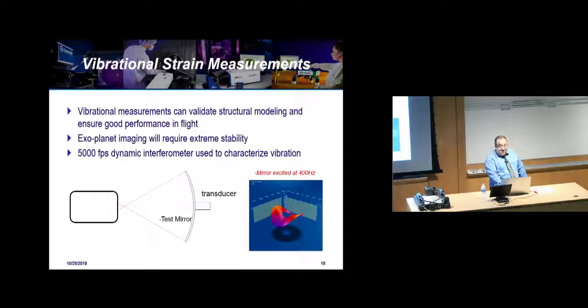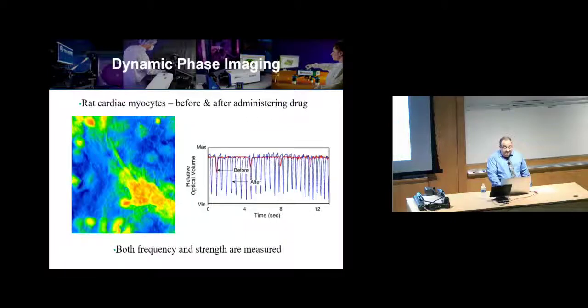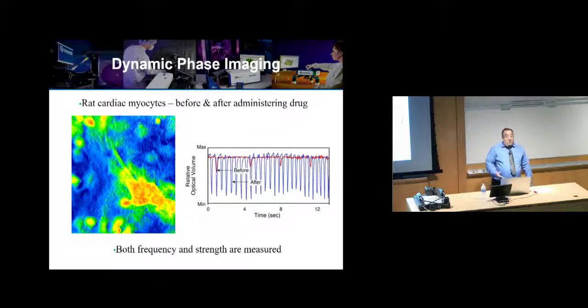You can also do things like strain measurements. If I have a test piece and I'm actuating it with a transducer, I can actually now do dynamic measurements and get modal analysis so I can see what's going on dynamically under different conditions. This was using a 5,000 frame per second interferometer, and this was moving at 400 hertz.